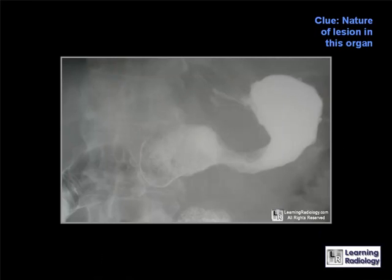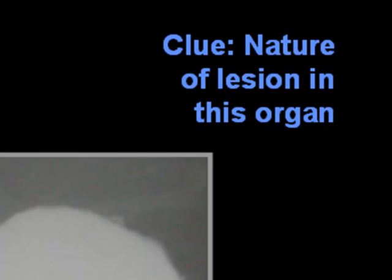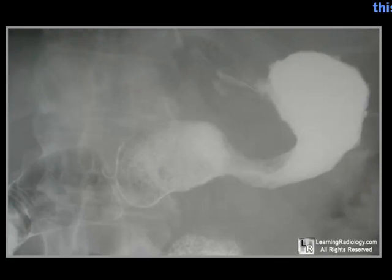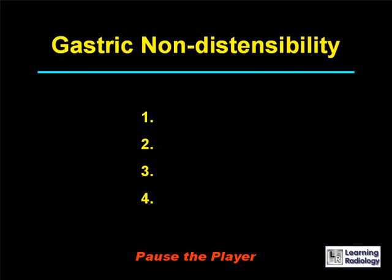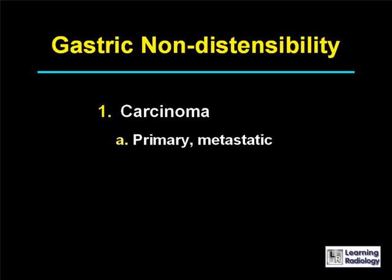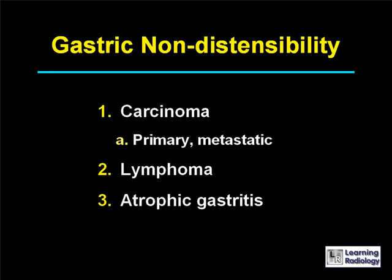The next differential diagnosis is for gastric non-distensibility. There are four main causes: carcinoma of the stomach (primary or metastatic), lymphoma, atrophic gastritis, or extensive scarring from peptic ulcer disease.